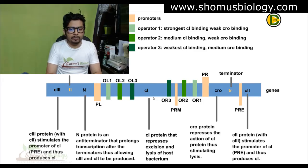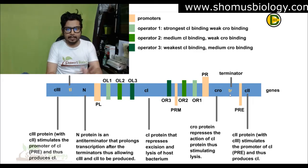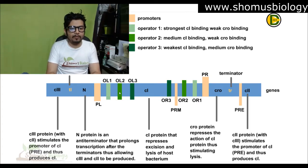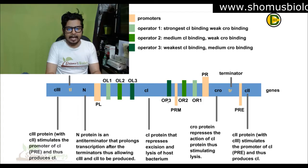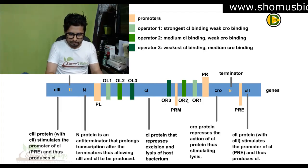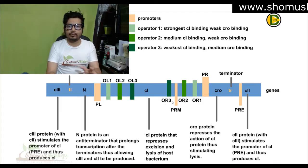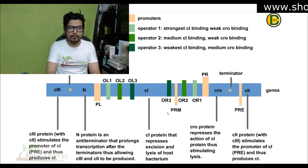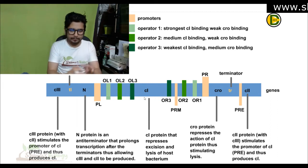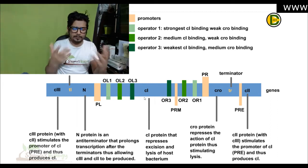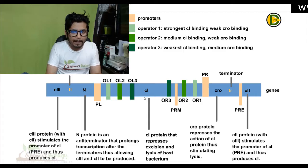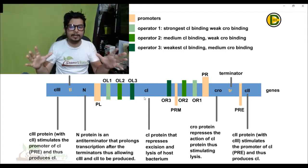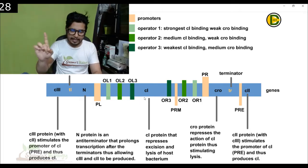There are two more promoters: PL on the left-hand side and PR on the right-hand side. Within these promoters we have operators — operator left 1, 2, 3 and operator right 1, 2, 3. Somewhere between operator right 2 and operator right 3 there is another promoter, PRM, which is also responsible for making C1 protein. So C1, C2, C3 and their related promoters are involved in the process of lysogeny, not the lytic phase.